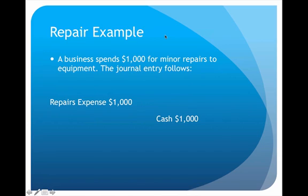To see a comparison and a contrast, we're going to have two examples — one will be a repair and one will be an improvement. In this first example, we have a piece of equipment — a plant asset we own and are already depreciating. If we spent a thousand dollars on that equipment for a minor repair, we can just go ahead and expense that amount. We will debit repairs expense one thousand and credit cash. We would prefer to do that because the more we can expense, the less our taxes are going to be.